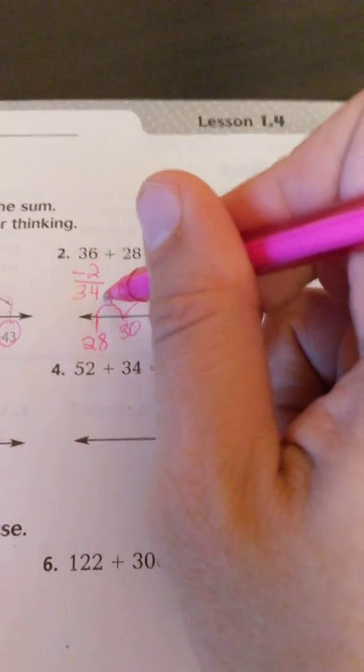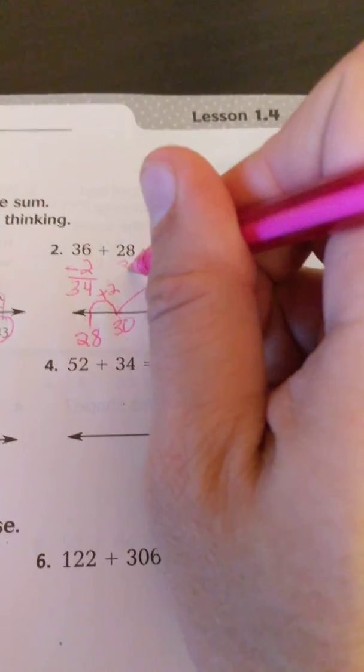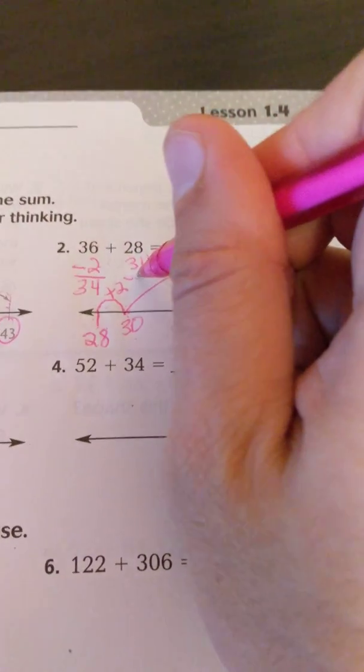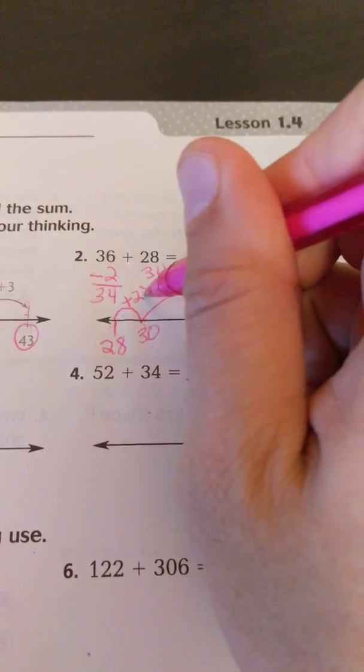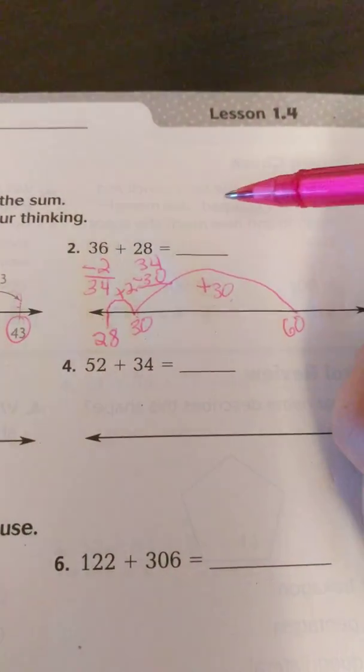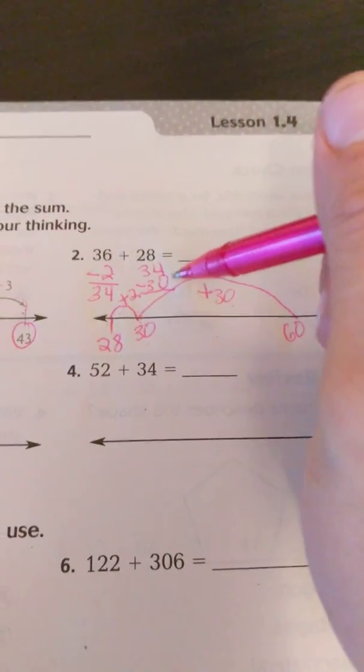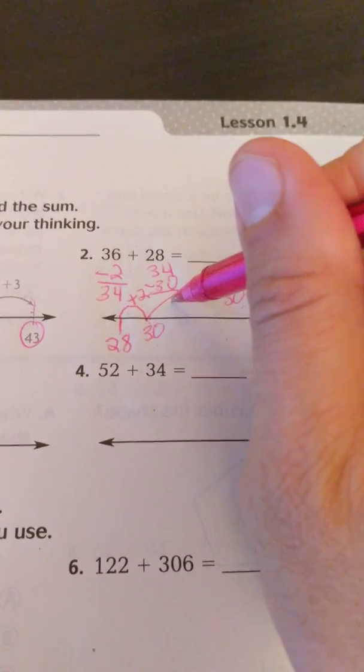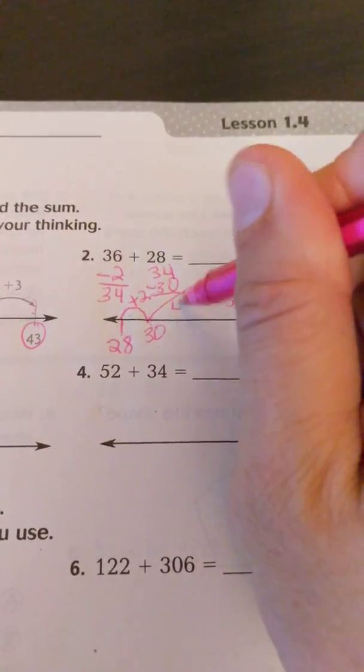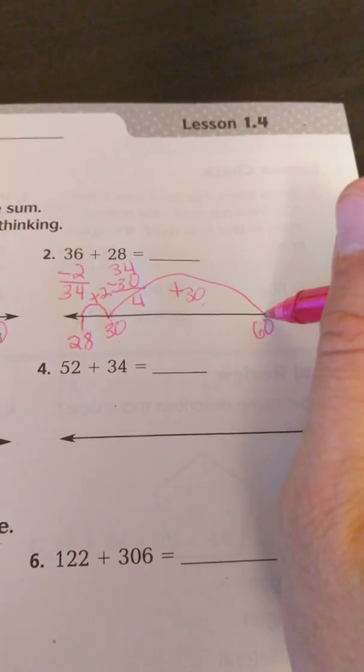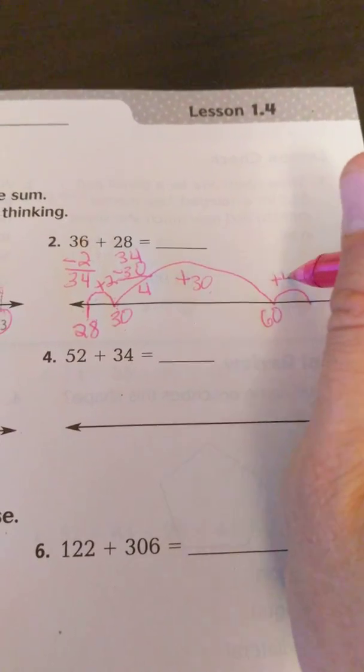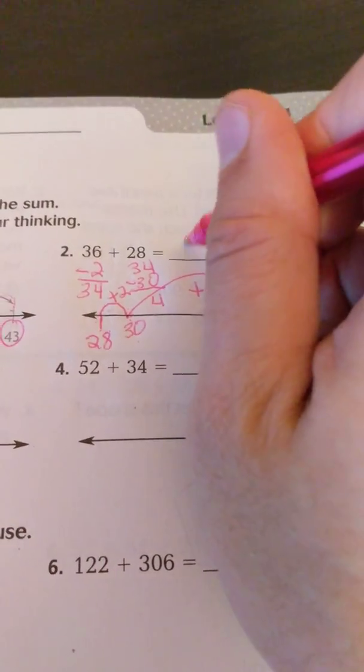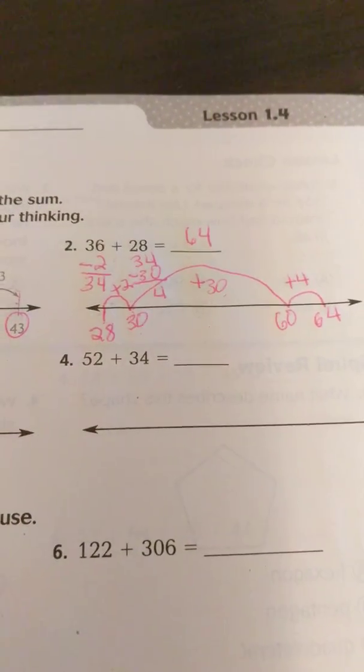Now remember, if I had 34 before, so it's getting a little crowded here. But if I take 34, and I just added 30 here, so I'm going to take 30 away from here. Now I'm just writing this out, you don't necessarily have to write this all out yourself, but I'm just writing this out so you can understand the thinking. So 34 minus 30 is 4. So all I need to do is add 4 more. Plus 4. And the answer is 64. Right there.